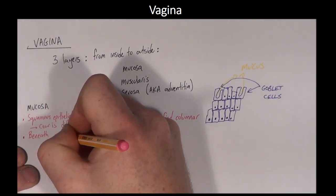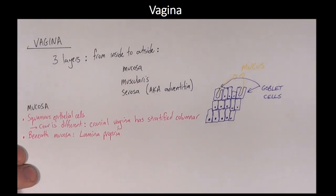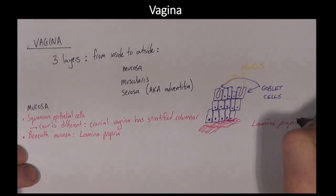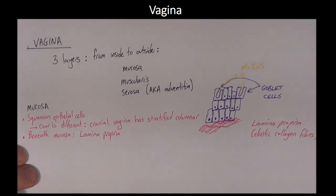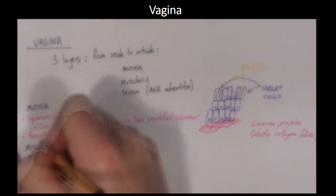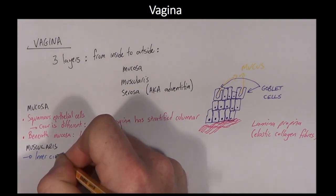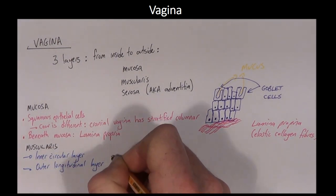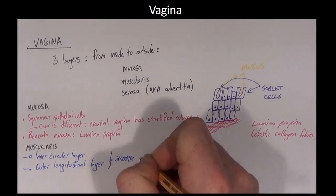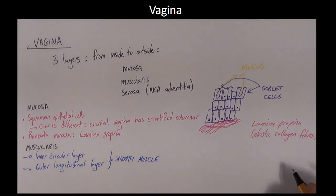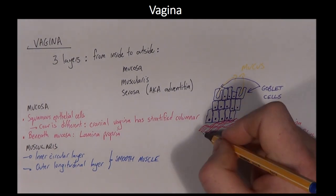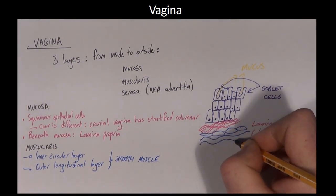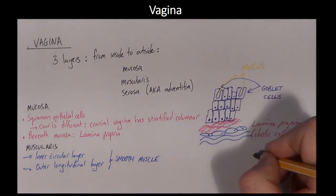Beneath the mucosa, there is a region known as the lamina propria, which serves as a bed for the squamous epithelium of the mucosa. The lamina propria has many elastic collagen fibers which help give the vagina its stretchy properties. The next layer is the muscularis, which consists of an inner circular and an outer longitudinal layer. The muscularis layer is not nearly as well defined in the vagina as it is in the uterus.